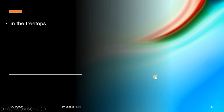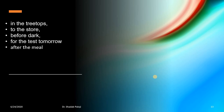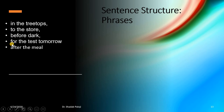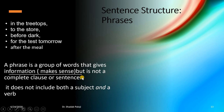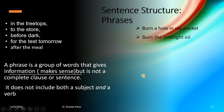Now let us look at these: 'in the treetops,' 'to the store,' 'before dark,' 'for the test tomorrow,' 'after the meal.' Do these start with a capital letter? No. These are incomplete in themselves and are called phrases. A phrase is a group of words that gives some information but does not give a complete sense. It is not a complete sentence because it does not have either a subject or a predicate — or it is missing one of the two.